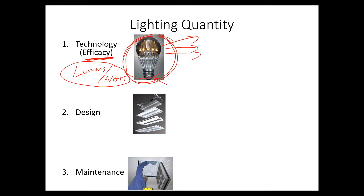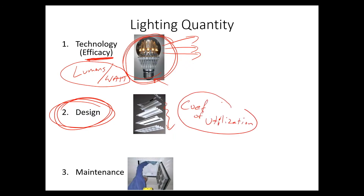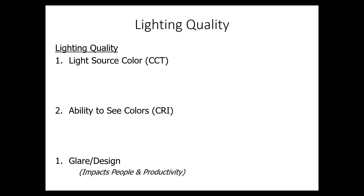Then the light has to escape the fixture, which is where design comes in. The light has to get through all these baffles and get to the target. There's a term called coefficient of utilization, which is somewhat like the delivery efficiency, and this relates to the fixture. Finally, the third thing is maintenance — if we clean the fixture more often, we get more light out of it.